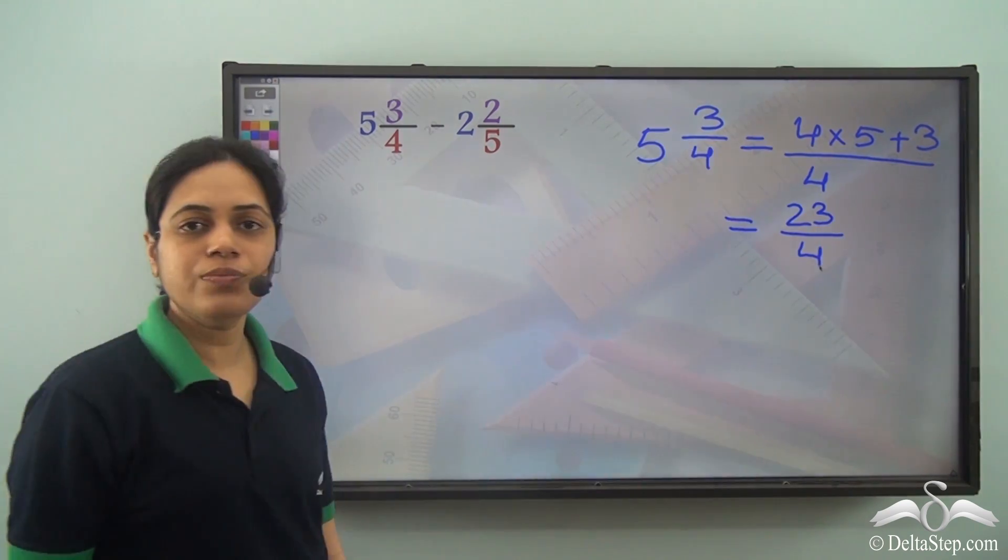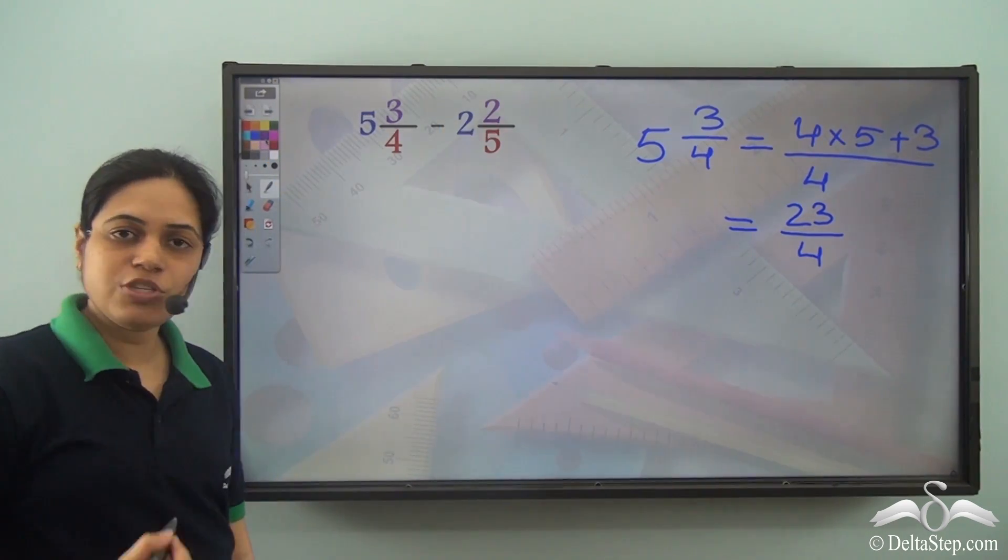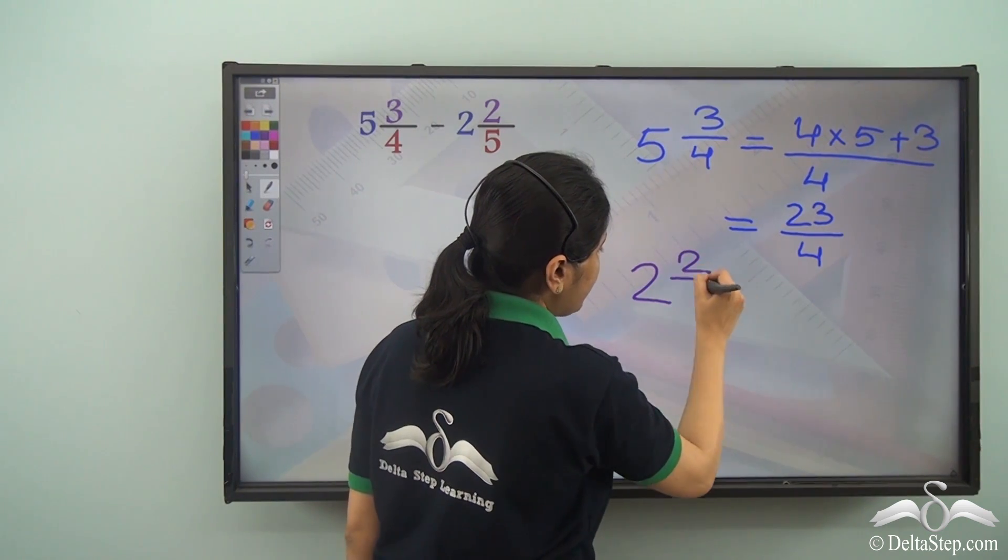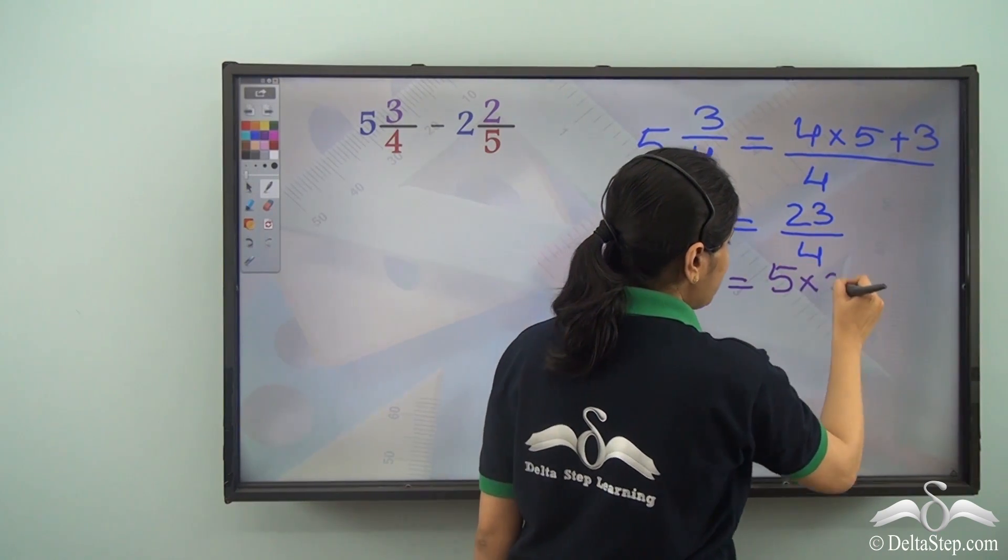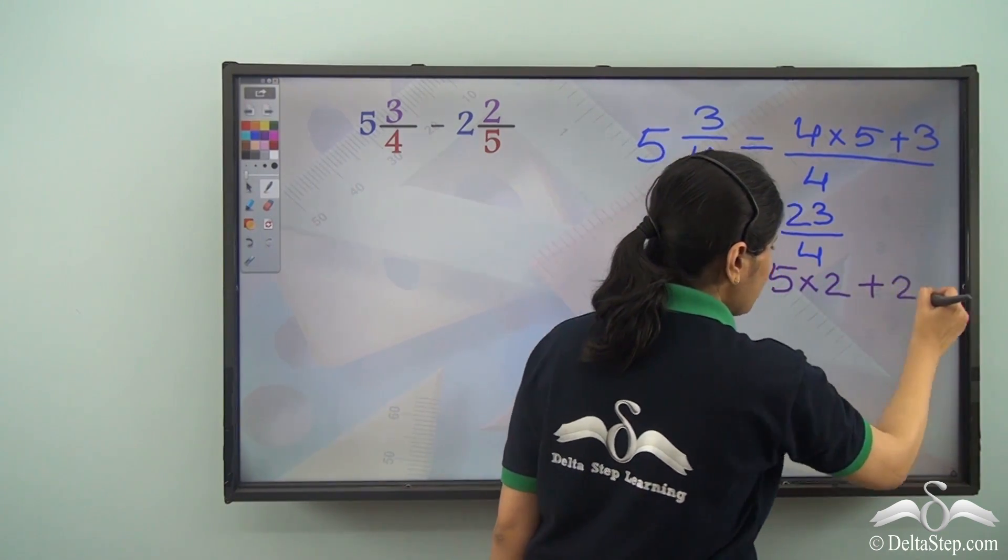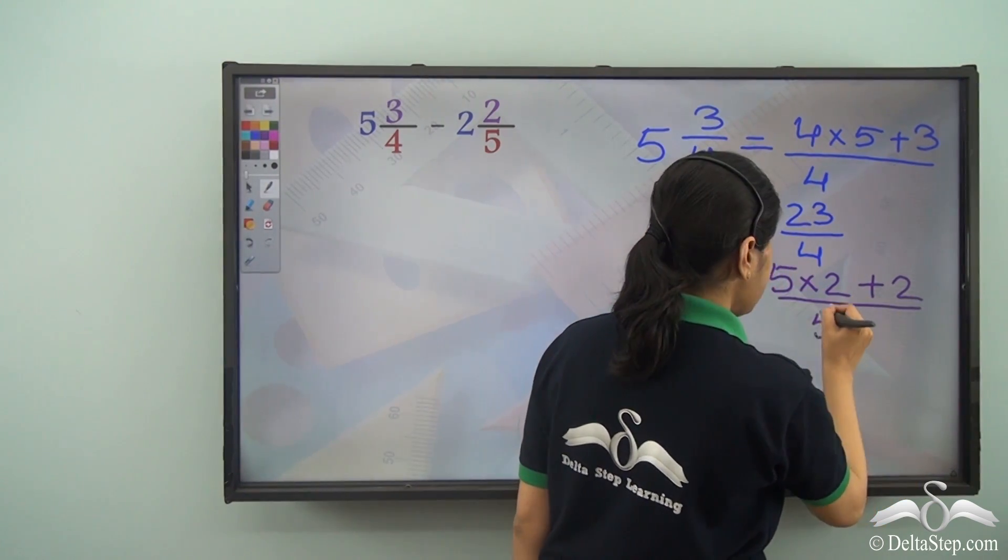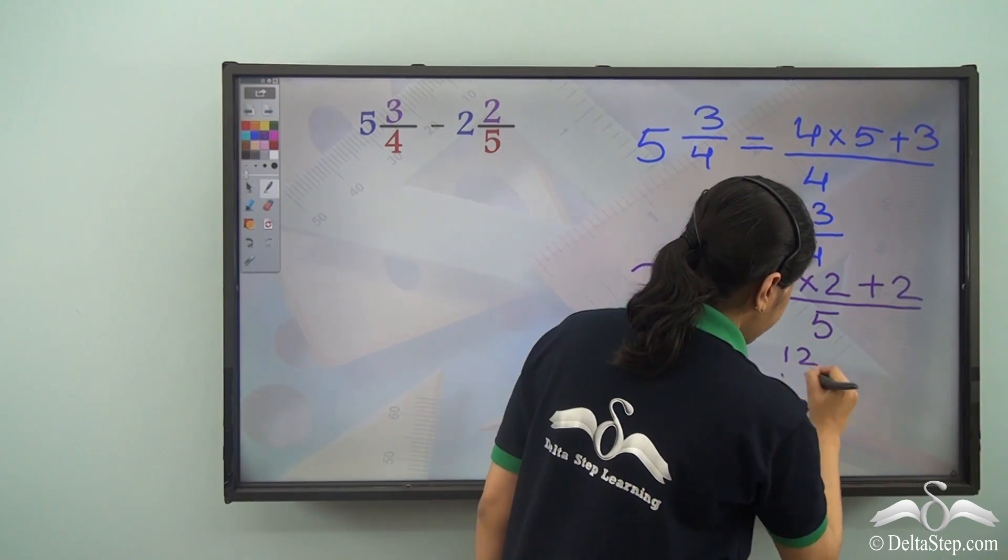So this is 23 by 4. I also need to convert 2 2 by 5 into improper fraction. So 2 2 by 5 is equal to 5 into 2 plus 2 divided by 5. This is equal to 12 by 5.